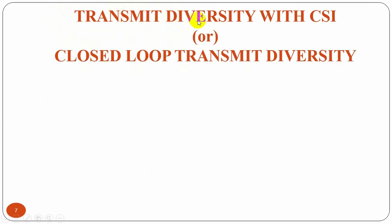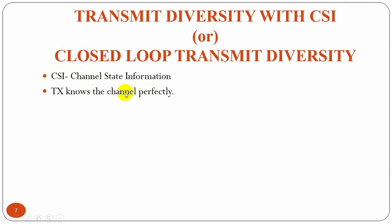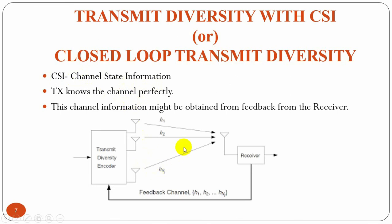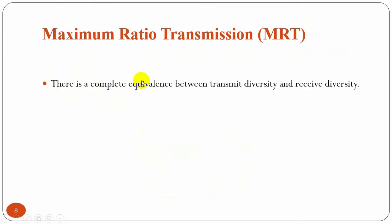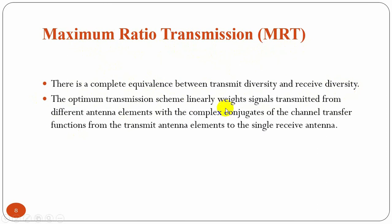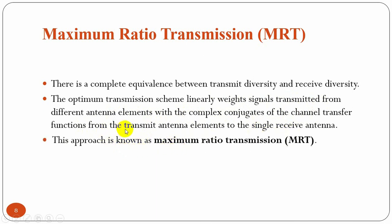The first type is transmit diversity with CSI, or closed-loop transmit diversity, where CSI is the channel state information. In this type, the transmitter knows about the channel perfectly, and the channel information is obtained from the receiver as feedback. There is a complete equivalence between transmit diversity and receive diversity — there should be maximum ratio transmission to maximize the received SNR. The MRT scheme linearly weights signals transmitted from different antenna elements with the complex conjugates of the channel transfer functions from the transmit antenna elements to the single receive antenna. The choice of antenna weights can maximize the received SNR.